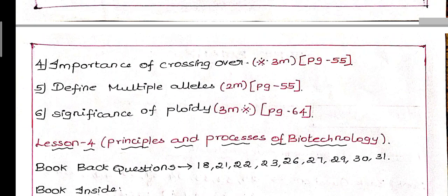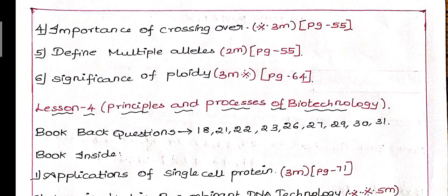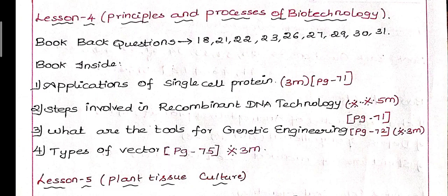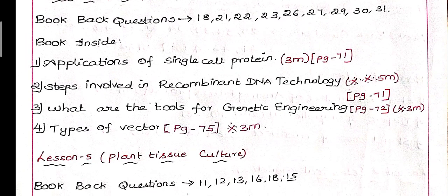Next, fourth lesson: Principles and process of biotechnology. Book back questions: 18, 21, 22, 23, 26, 27, 29, 30, 31. Applications of single-cell protein, sometimes applications of SCP, that is single-cell protein, 3 mark, page number 71. Next, second question: Steps involved in recombinant DNA technology, very very important 5 mark, quarterly exam question, page number 71.